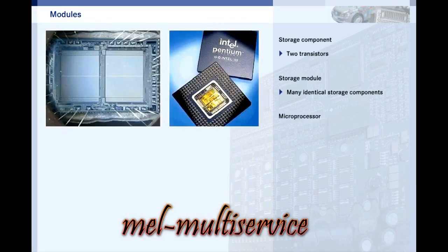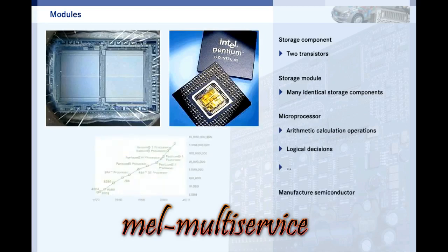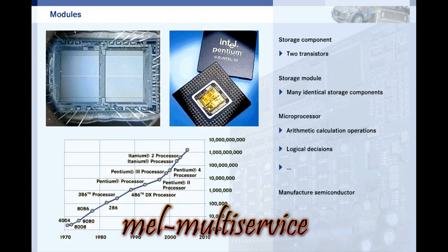Microprocessors, on the other hand, contain a more complex arrangement of transistors. They can perform arithmetic calculations and make logical decisions. Semiconductor production is making rapid advances: the number of transistors in each module doubles every 24 months, yet the size remains the same. Modules containing billions of transistors are currently being produced.